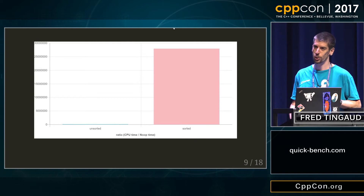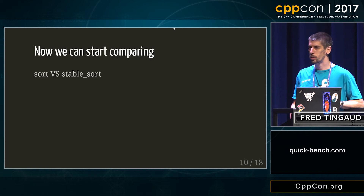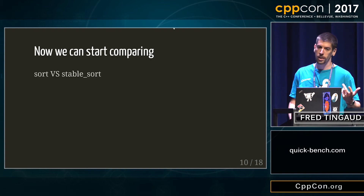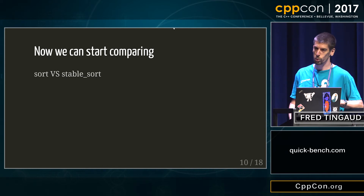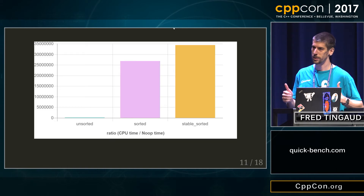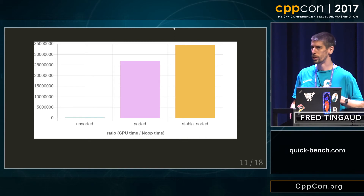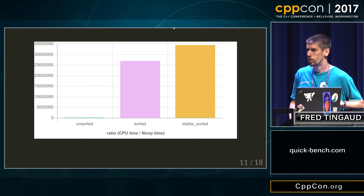And yes, it does make a difference, so we can completely ignore the copy part of the benchmark. Starting with sort and stable_sort — I expect stable_sort to be a little bit slower than sort. It is, and it's not that much slower in fact. So if you need stability, you can probably use stable_sort when you need it.